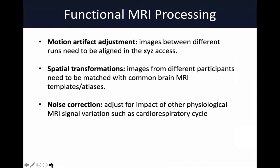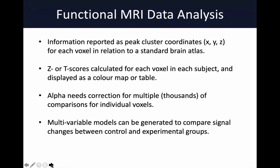Before an activation map is ready, significant data processing is required for functional MRI. The analysts must adjust for motion artifacts and noise throughout the cardiorespiratory cycle. They also have to transform the MRI images from participants onto common standard brain atlases so comparisons can be made across participants for common brain regions. Once processed, a detailed analysis is carried out for each voxel cluster, with different brain regions assigned different voxel coordinates, and comparisons are made both between patients and between individual participants in a study.